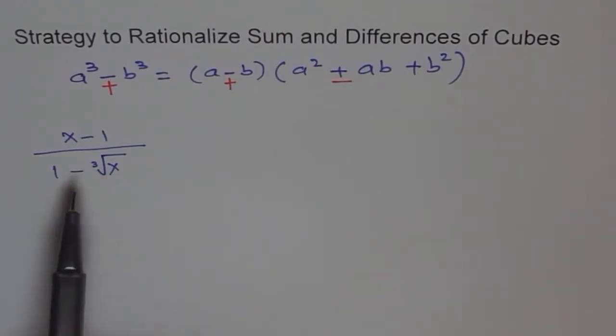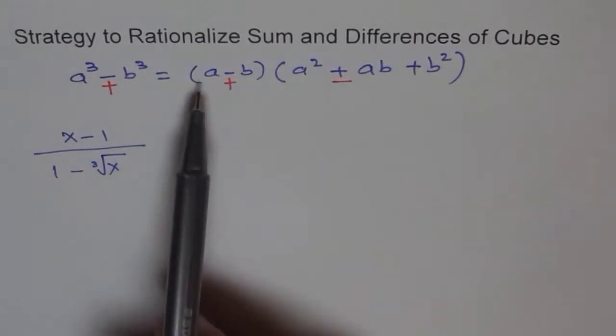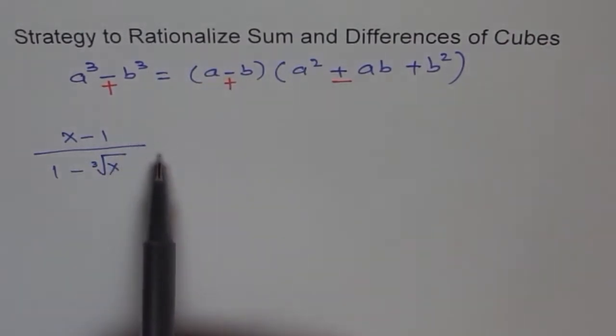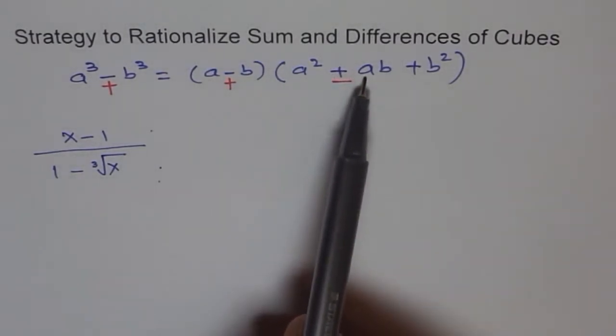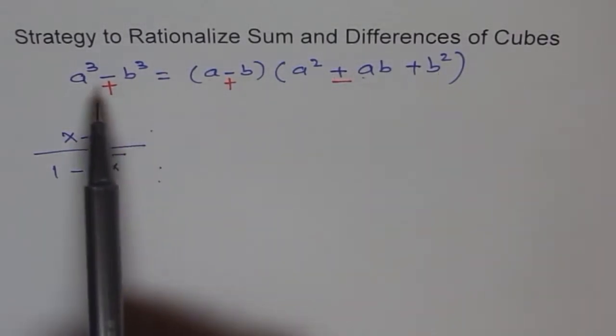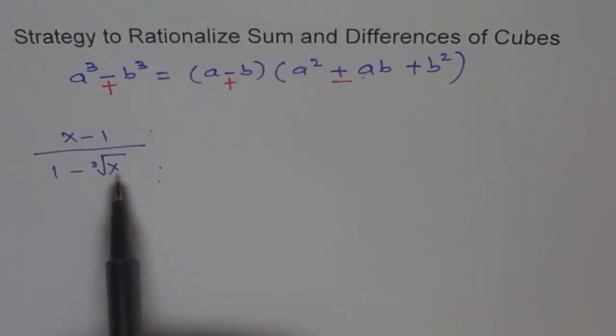To rationalize this imagine you have one a minus b term. If I multiply both numerator and denominator by a² + ab + b² then I get a³ - b³. Cube of this will be just x and so we will get rid of the radical part. That's the beauty.